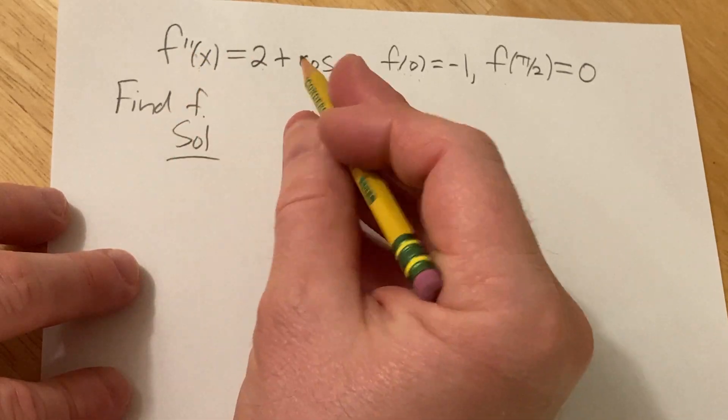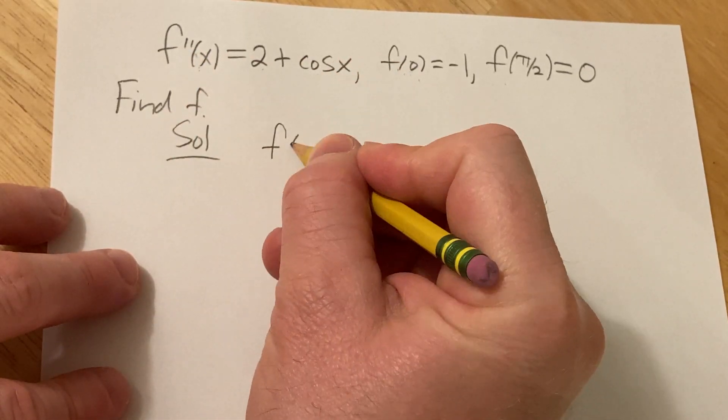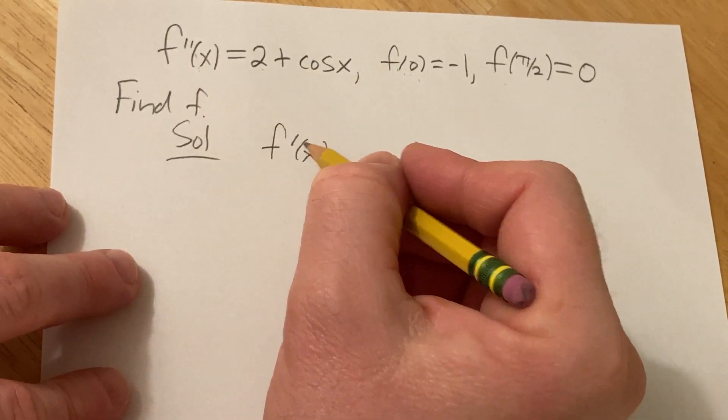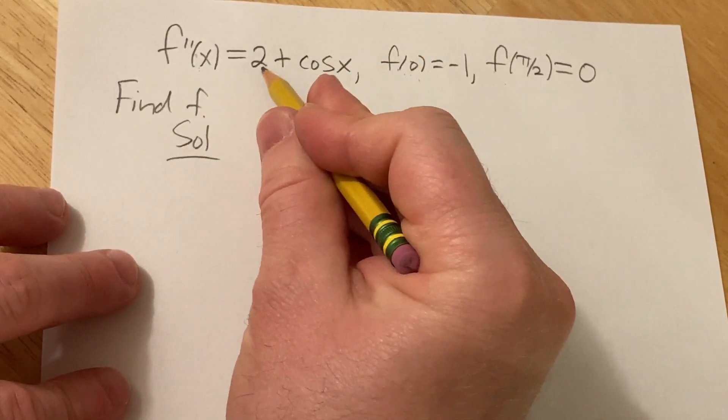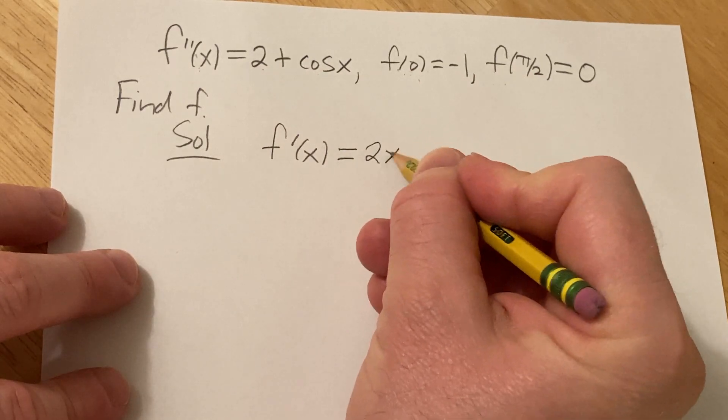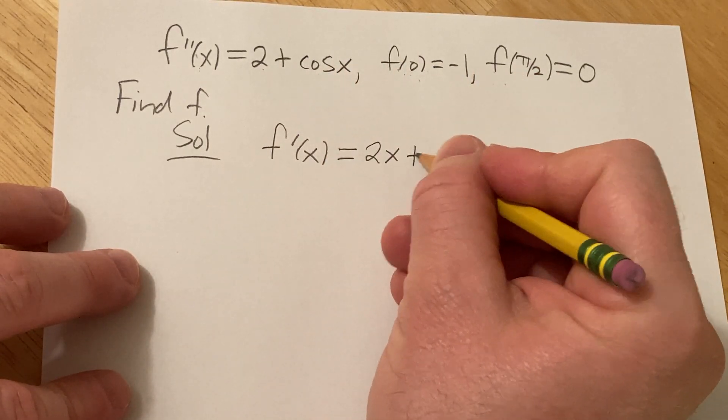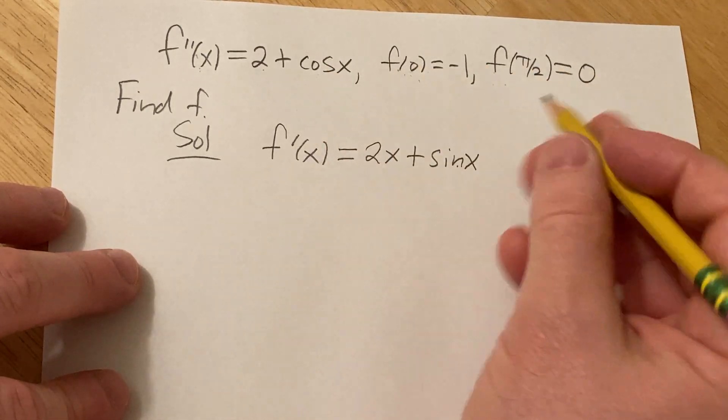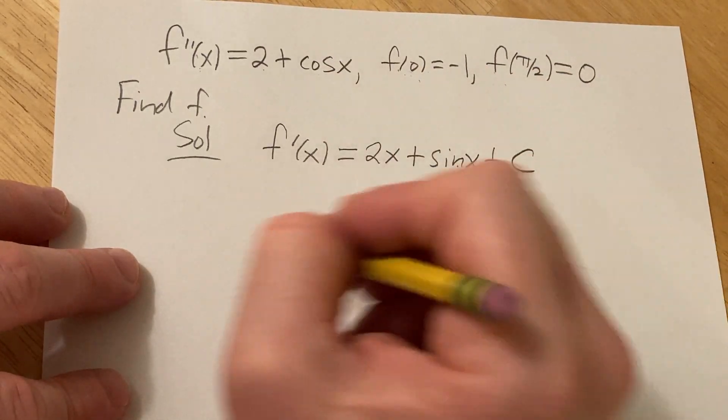So, integrating this one time brings us to f prime of x. Because if you integrate the second derivative, you get the first derivative. Integrating 2, you get 2x. Integrating cosine, you get sine, right? Because the derivative of sine is cosine. Plus a constant of integration, capital C.